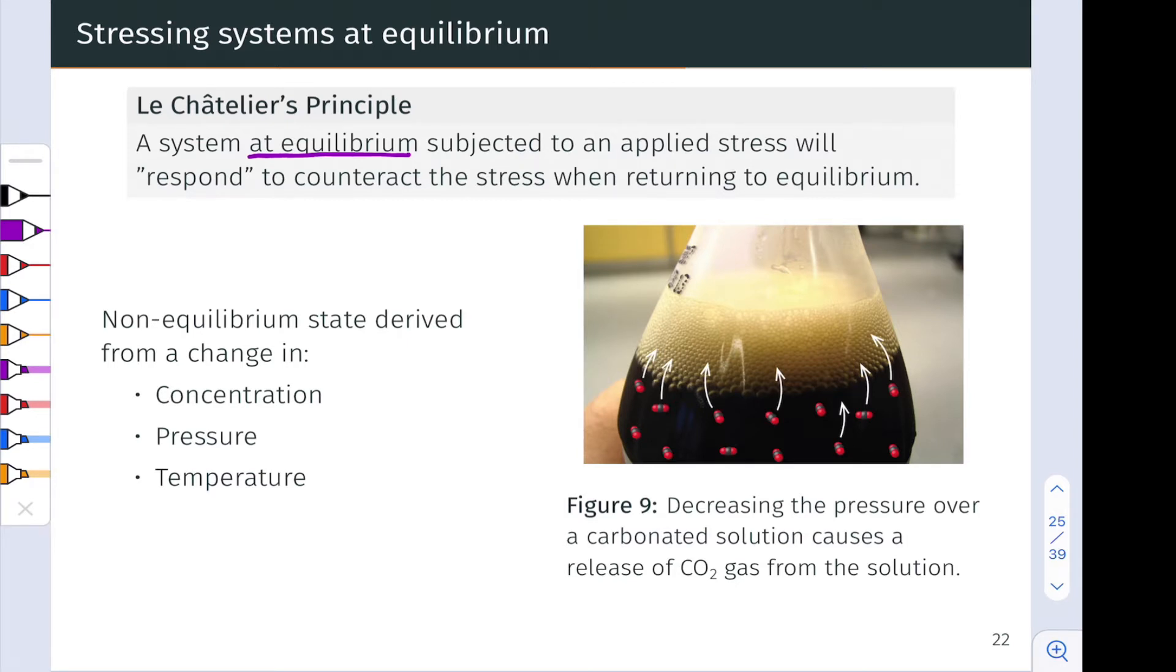So we apply a stress to the system, involving a change in concentration of a reactant or product, a change in temperature, a change in volume, something along these lines. Because of the dynamic nature of chemical equilibrium, the system will respond. In returning to equilibrium, which it will do spontaneously, it will counteract the stress—essentially move in the direction opposite the stress.